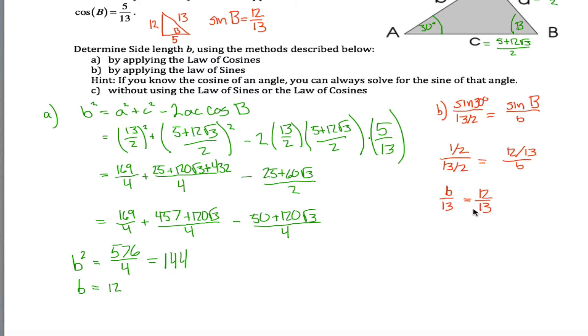Hey, wait a minute. If b over 13 equals 12 over 13, I think I can figure out b. I think b is just going to be equal to 12. Multiply both sides of the equation by 13, and you got that b is 12. Hey, same thing I had over here. That's nice.